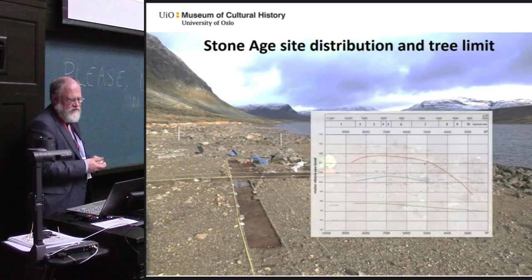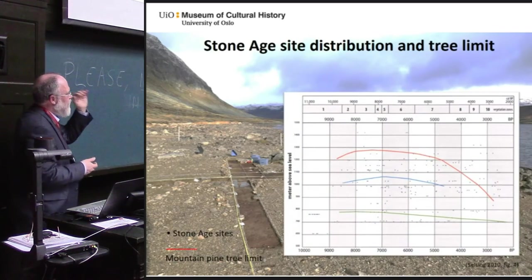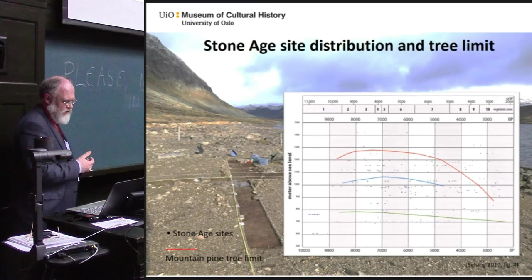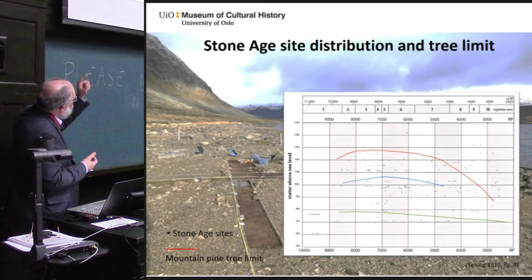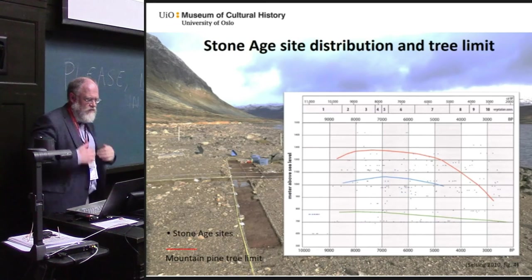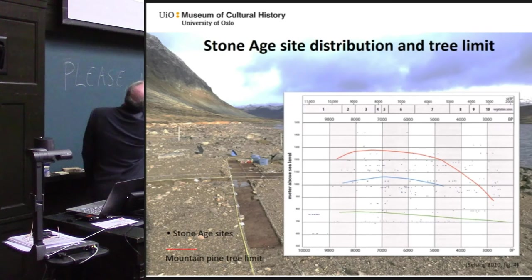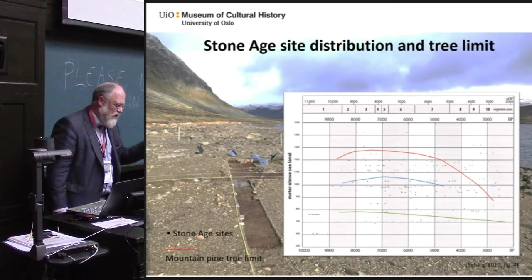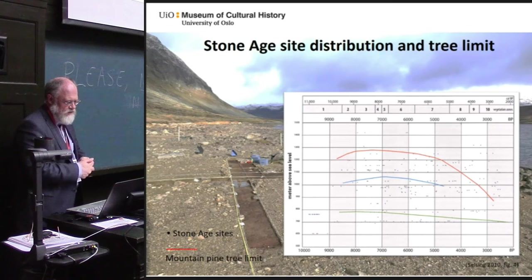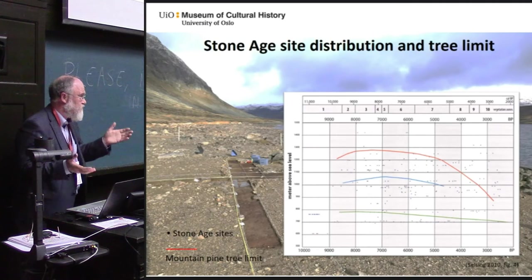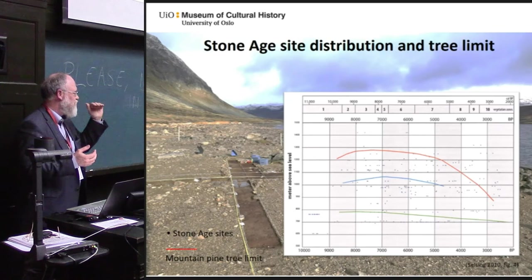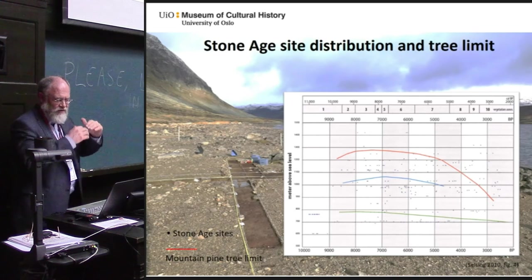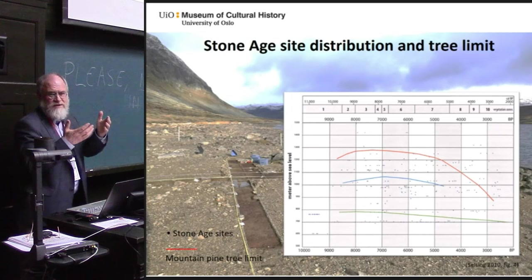The Stone Age site distribution and the tree limits shows that most Stone Age sites are actually below the tree limit at the time that they were used. We have different tree limits on the west coast and in eastern Norway in the mountains. The red line here is the tree limit for the mountains, and you can see the dots showing the Stone Age sites — most of them are below this tree line at any time. Why this is important is that when we look at Stone Age sites in the high mountains today, we get the impression that this is how it has always been — that the sites were up in the high mountains and they had to rely on reindeer hunt. But in reality, when you look at the tree limit, you will see that no, these weren't high mountain sites — they were forest sites.